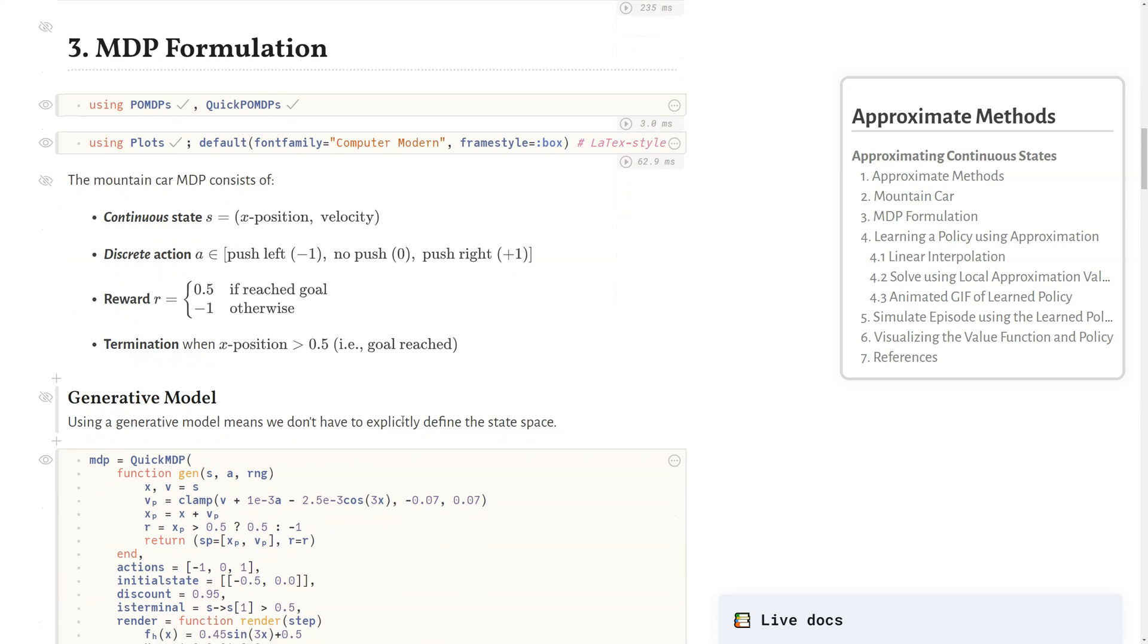To formulate this as an MDP, first there's continuous states which is x position and velocity, and these are real values so there's technically an infinite number of states we can have here. Our discrete action space consists of pushing left which is a negative one velocity, no push at all which is zero velocity, or push right which is a plus one velocity. Our reward is 0.5 if we reach the goal, otherwise every time step we get a reward of negative one. This encourages the agent to do it quickly and we terminate the MDP when our x position is greater than 0.5, meaning we reach the goal.